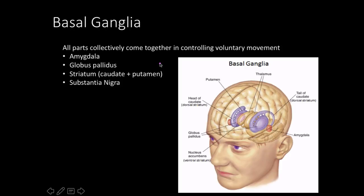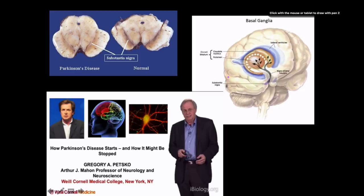The amygdala is also part of the basal ganglia and has multiple functions. Other basal ganglia components include the globus pallidus, the striatum, and the substantia nigra — the last of which is critically important in Parkinson's disease. Gregory Petsko's biology podcast covers the discovery of Parkinson's disease, its pathophysiology, and treatment in great depth. Susan Lindquist at MIT frames it as either oxidative stress or a protein folding problem. A link will be provided in the description.